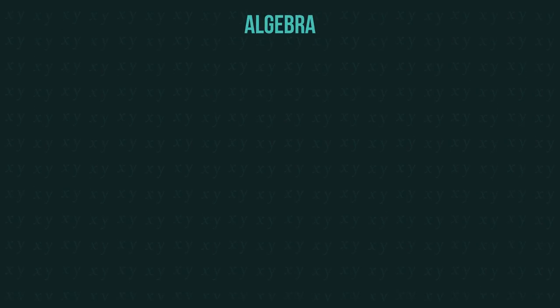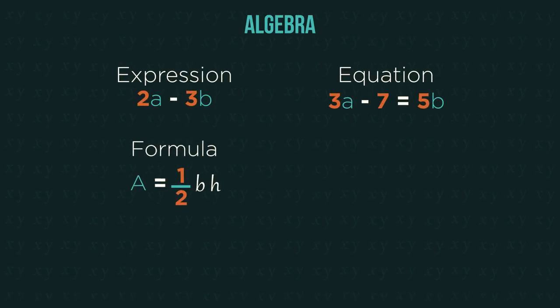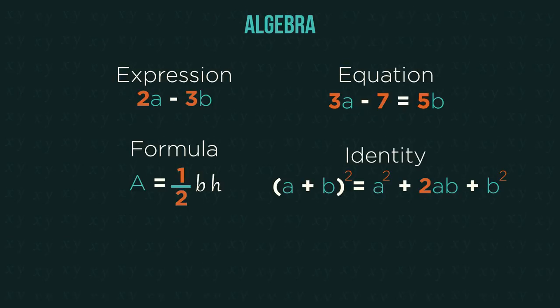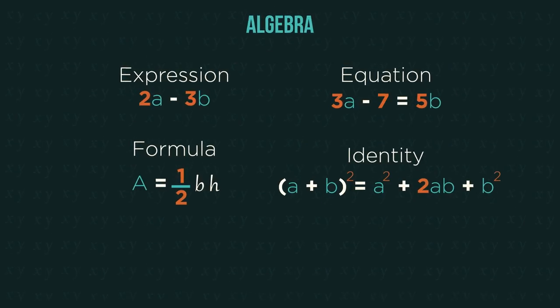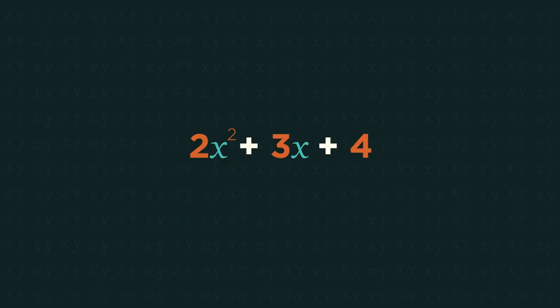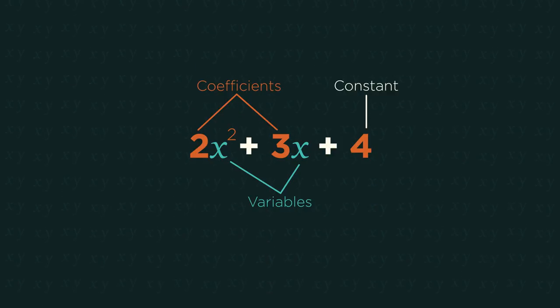In algebra, we have lots of different names for different things. Expressions, equations, formulae, and identities are all slightly different versions of similar things. Within these, we have variables, constants, coefficients, and exponents to describe the different parts.